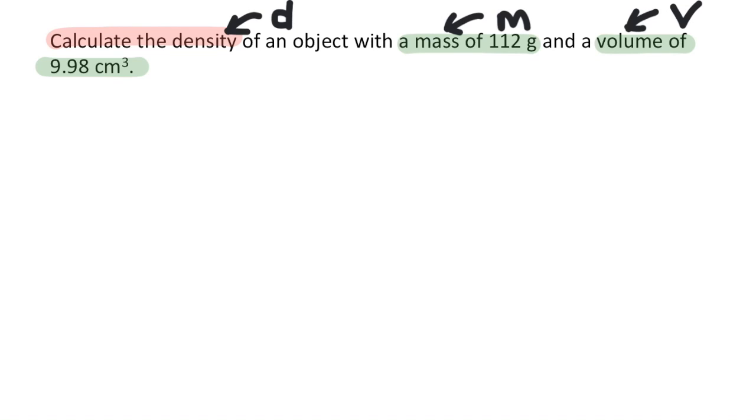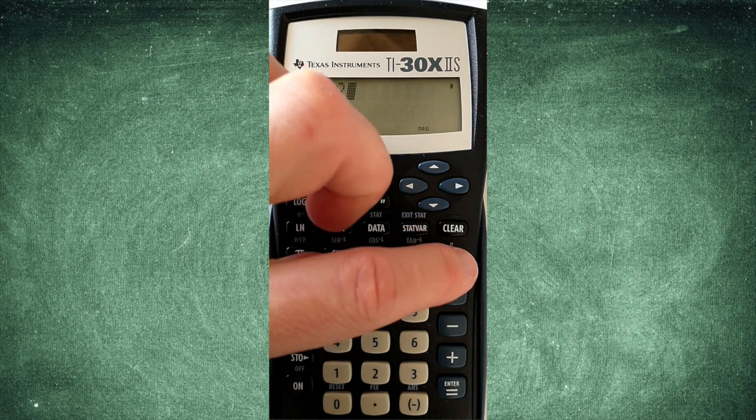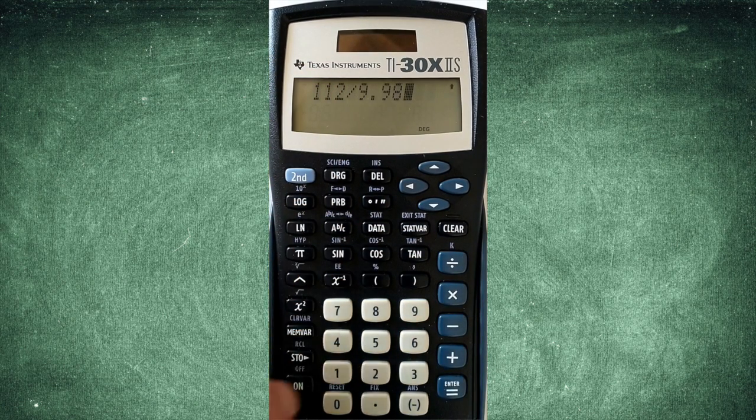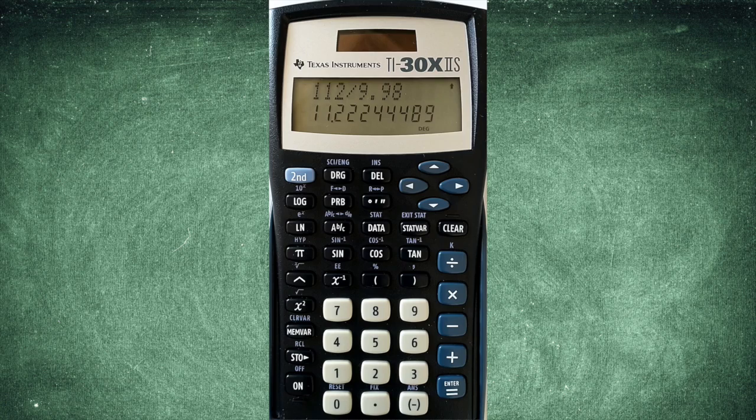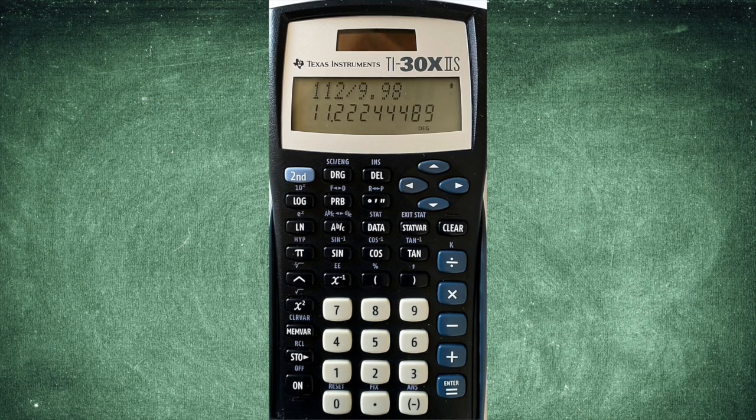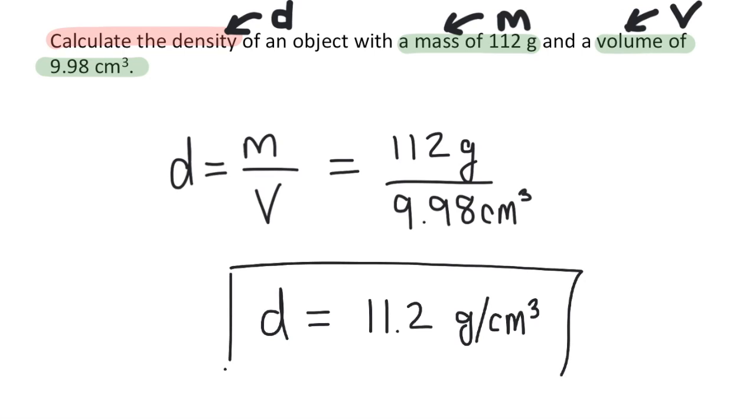Okay, since I'm solving for density, now I'm going to write the equation down. D equals M over V. I organized all the given information already, so I can just plug it into the equation like this. Now I'll type it into my calculator. 112 divided by 9.98. I'm going to round the answer to three digits, since both of my given values were three digits long. So the answer is 11.2 grams per centimeters cubed.